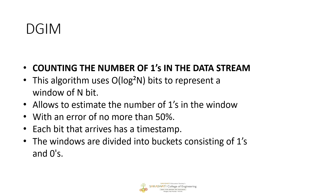Each bit that arrives in the data stream has a timestamp. The bit which arrives first will have timestamp 1, the second bit will have timestamp 2, and so on. The window is divided into buckets consisting of size 1 and 2.